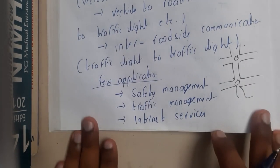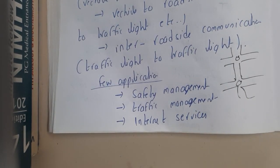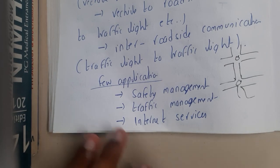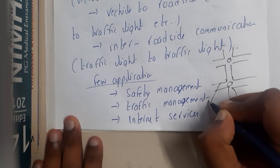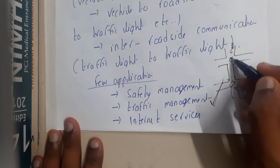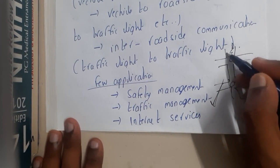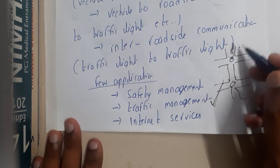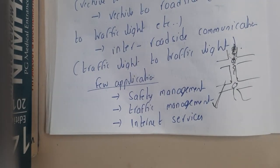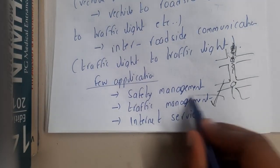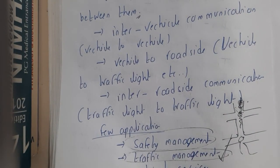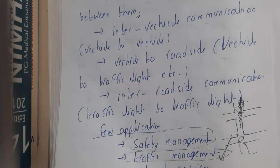Where are VANETs useful? One key application is traffic management. If a road is very busy, a machine learning algorithm senses how many vehicles are on the road and whether it is fully crowded. Based on that, it gives that lane more signal time compared to empty lanes, allowing smart traffic management using the vehicular ad hoc network.